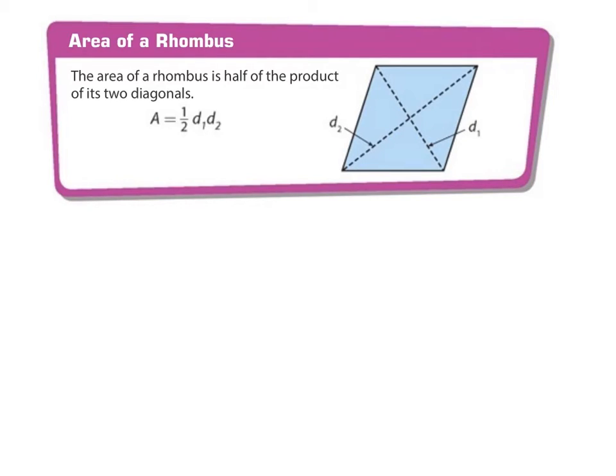Alright, let's look at this last one, area of a rhombus. The area of a rhombus is half of the product of its two diagonals. So this is a diagonal going from one corner to the opposite, one corner to the opposite. So each one of these is a diagonal. And they can be the same length or they can be different lengths, depends on the rhombus. So the formula says our area equals one half of the product. So we multiply the two diagonals together and then we divide it by 2. Or we can divide one of the diagonals by 2 and then multiply it times the other one, or vice versa. So let's look at an example of this one.